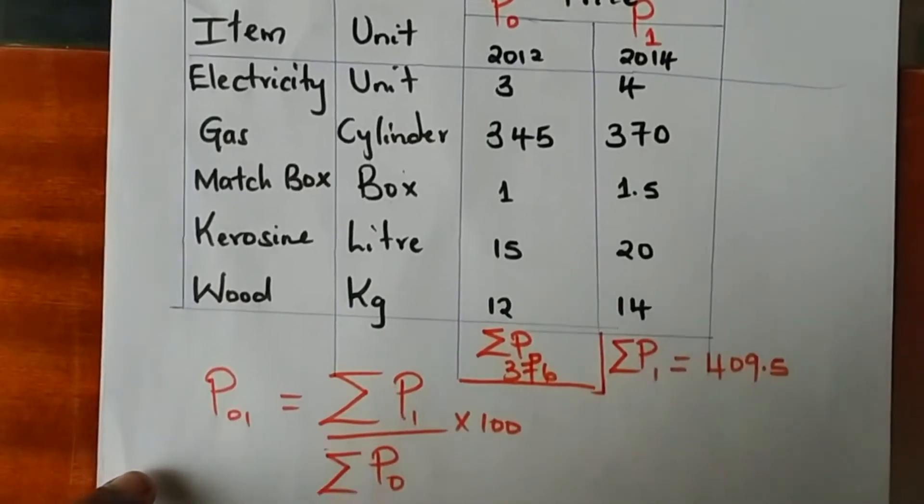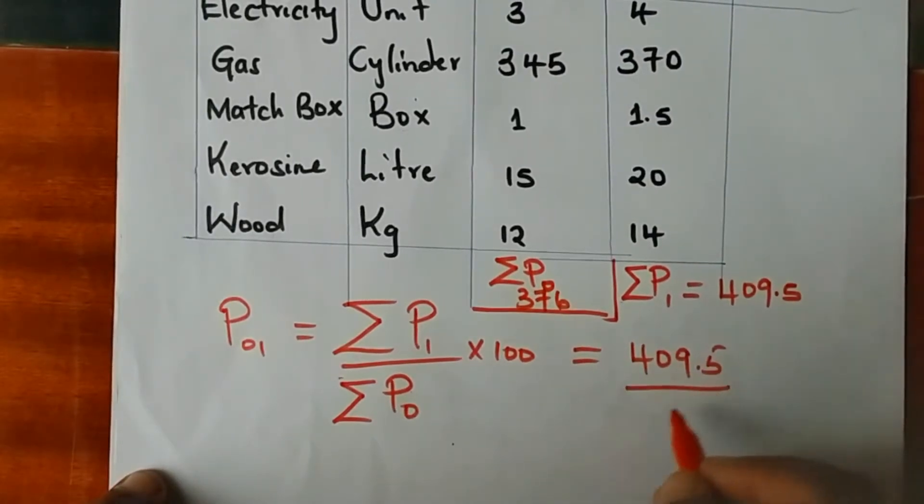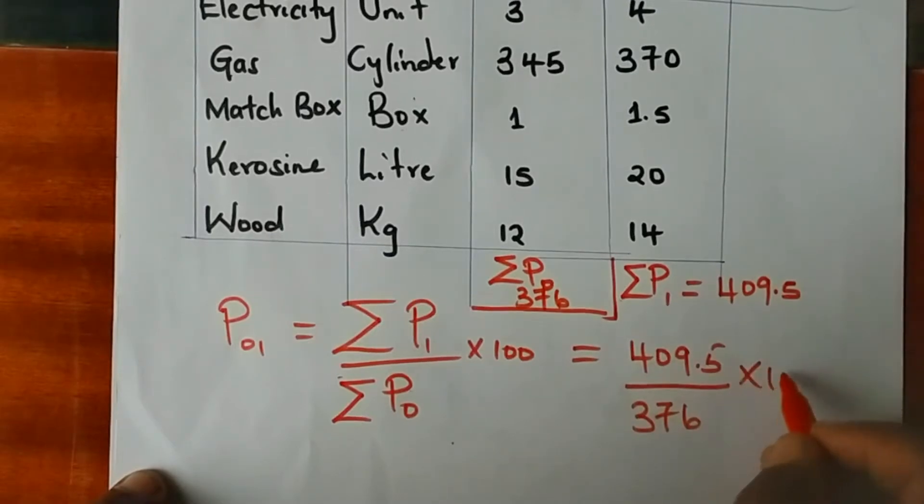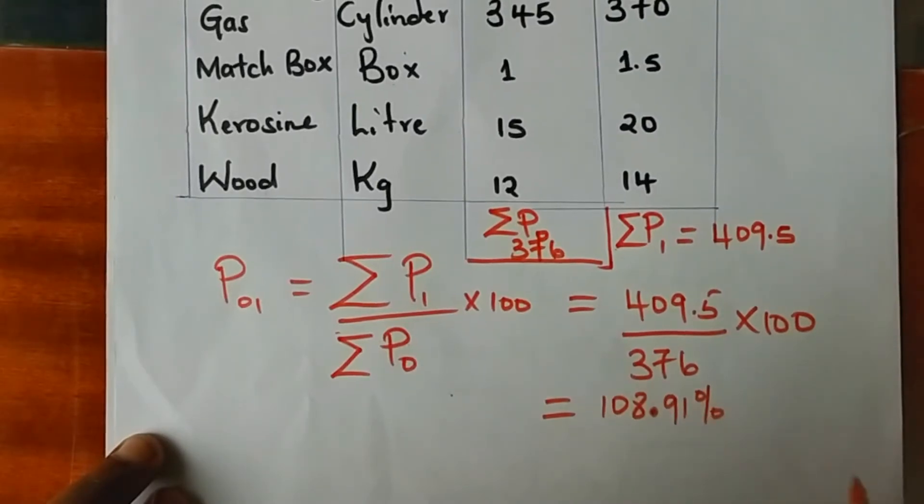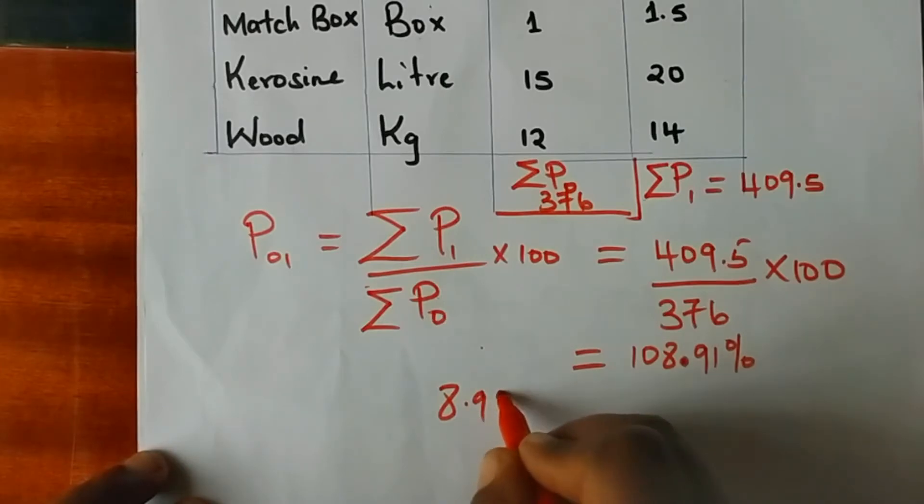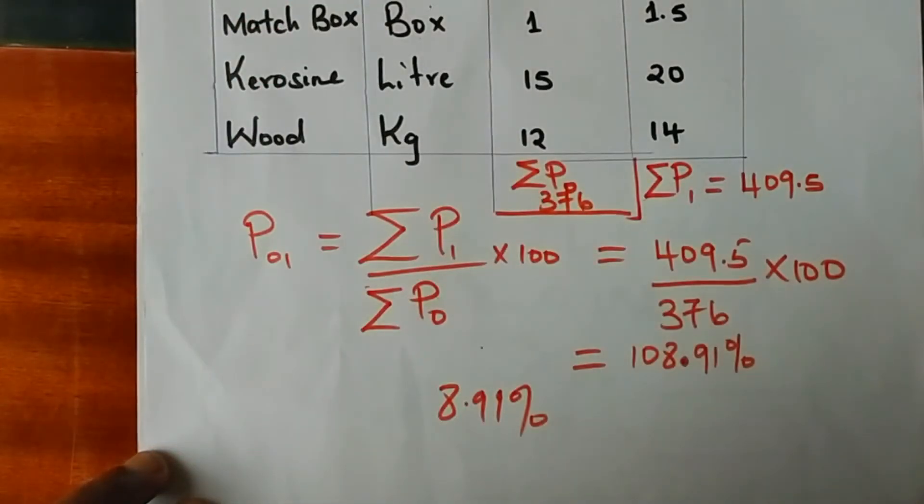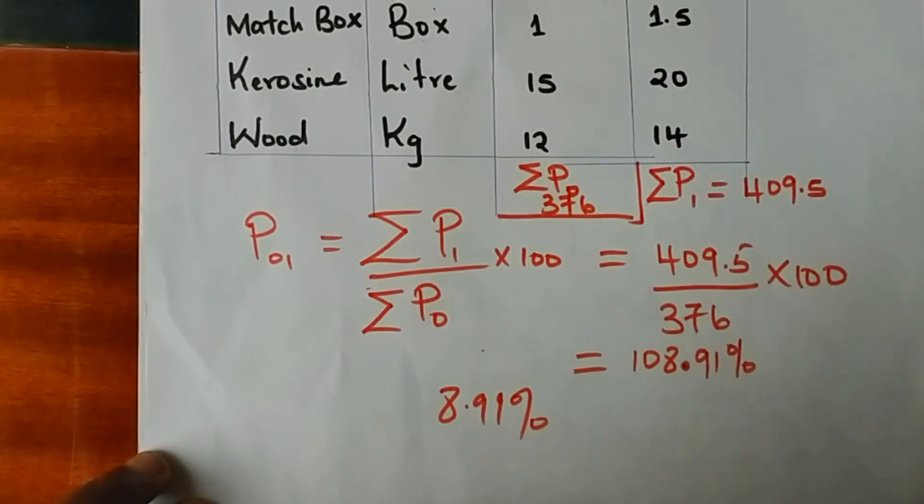So the price index will be 409.5 divided by 376, multiplied by 100, and the resulting index is 108.91 percent. This is an indication by this method that there has been an 8.1 percent increase in price of this set of commodities between the two years, between 2012 and 2014.